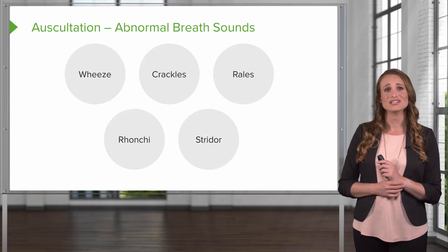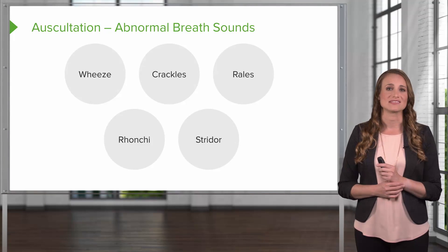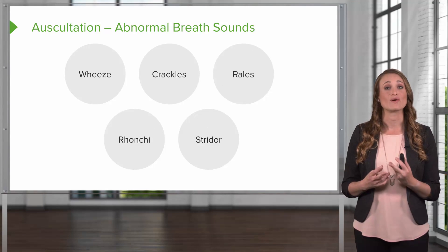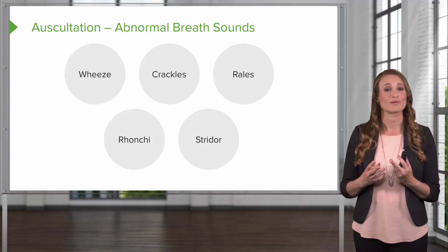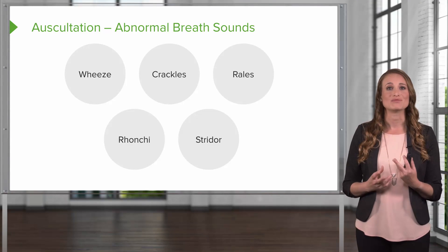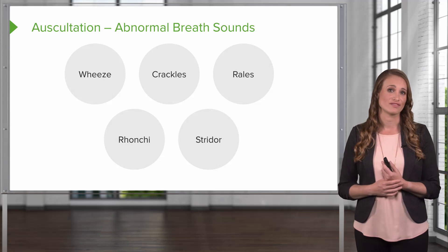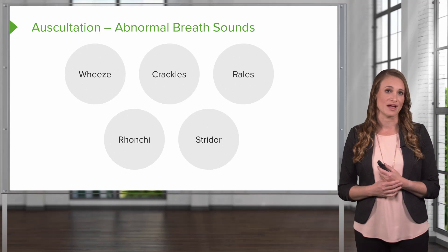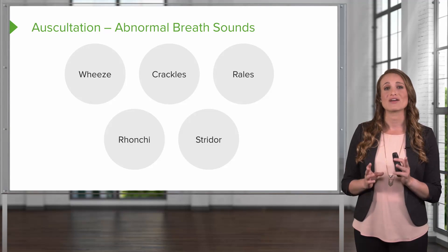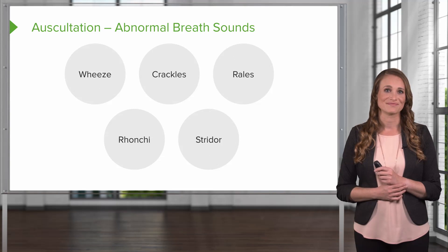Last, you're going to check for stridor, and this is a high-pitched wheezing sound caused by a disruption of airflow in the upper airway. There may be a foreign body obstruction, mucus, or edema that blocks the airflow through the upper airway, and this can usually be heard from the other side of the room without needing your stethoscope.